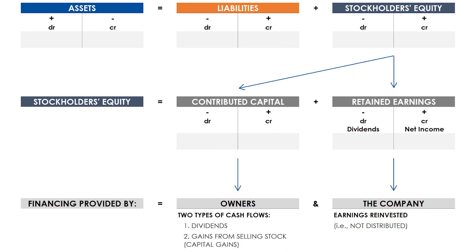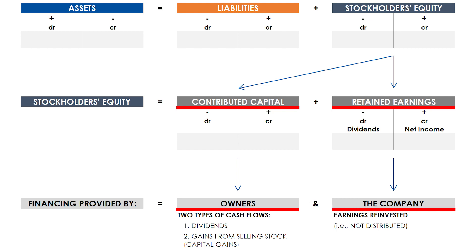As the balance sheet starts to come together, I want to revisit the stockholders' equity account to expand on the difference between contributed capital and retained earnings. Stockholders' equity is comprised of two accounts: contributed capital and retained earnings. Financing under the equity account is provided by owners or investors under contributed capital, and by the company under retained earnings. If a company raises money from investors, it's contributed capital. If the company is generating a profit, it's listed under retained earnings. Contributed capital comes from outside the company, while retained earnings are generated internally.